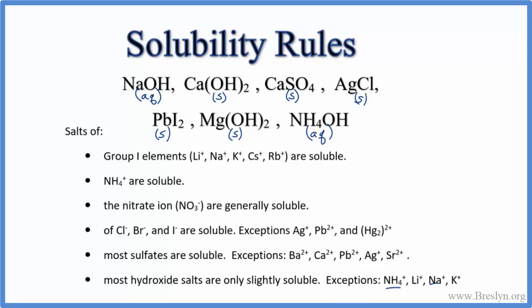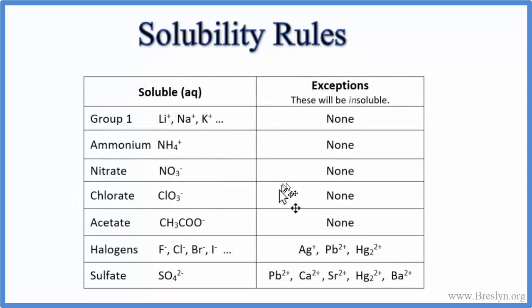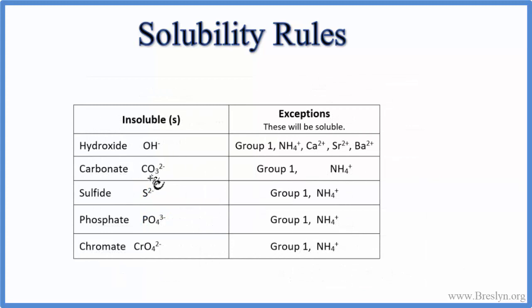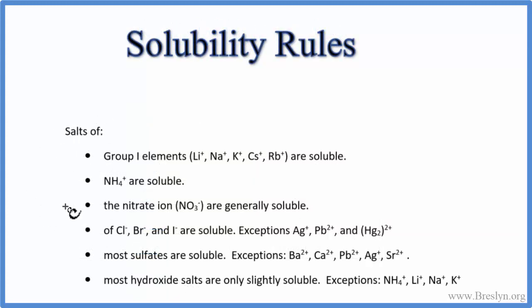Let's look at a few other rules you might see. Sometimes the solubility rules are listed in a table. We know ammonium ion is always soluble with no exceptions, and nitrate is always soluble. A new one: chlorates, ClO3-, are usually soluble. Acetates are also usually soluble. For insoluble compounds, we've added carbonates (CO3 2-) — generally insoluble unless you have ammonium carbonate. Sulfides are generally insoluble except with group 1 or ammonia. Same for phosphates and chromates. Check with your teacher to see which ones you need to memorize.